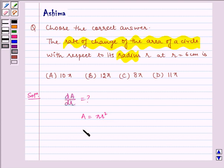Now, differentiating it with respect to r, we get dA/dr = 2πr.